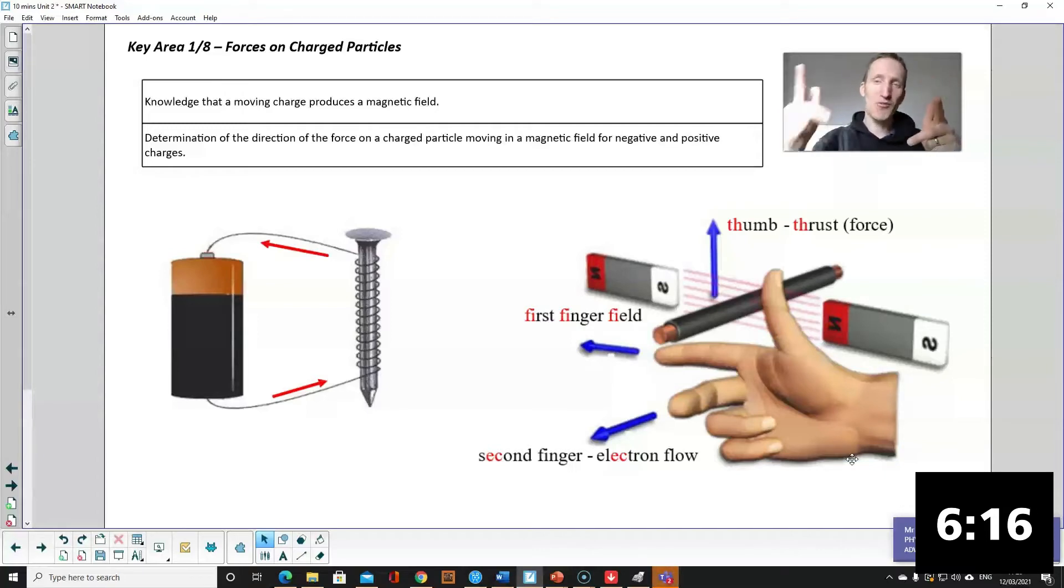Left for protons positive, right for electrons negative. P-E, protons, electrons. So choose your hands, line up your fingers, work out the direction of the force.